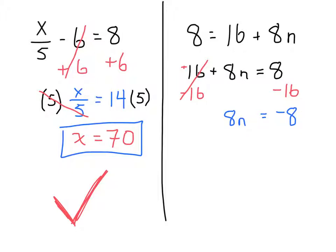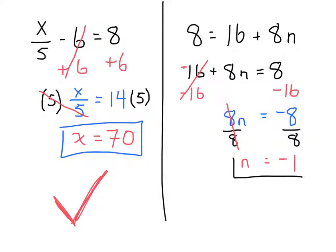Now we have our one-step equation: 8n is equal to negative 8. Since 8n is multiplication, we do the opposite, which is division. We divide by 8 on both sides. The 8s cancel out, leaving n. On the right side, negative 8 divided by positive 8 — a negative divided by a positive is always negative. So negative 8 divided by 8 equals negative 1, and n is equal to negative 1.